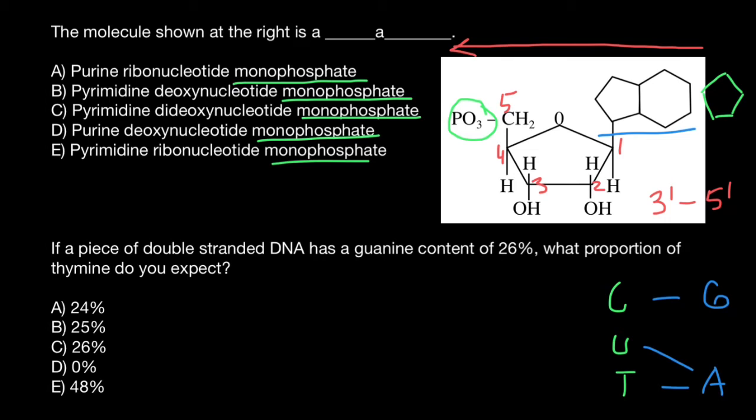Now we can choose a name. So this is going to be purine, this is going to be ribose and monophosphate here. So purine ribonucleotide monophosphate. Answer A. All the rest are going to be wrong variants.